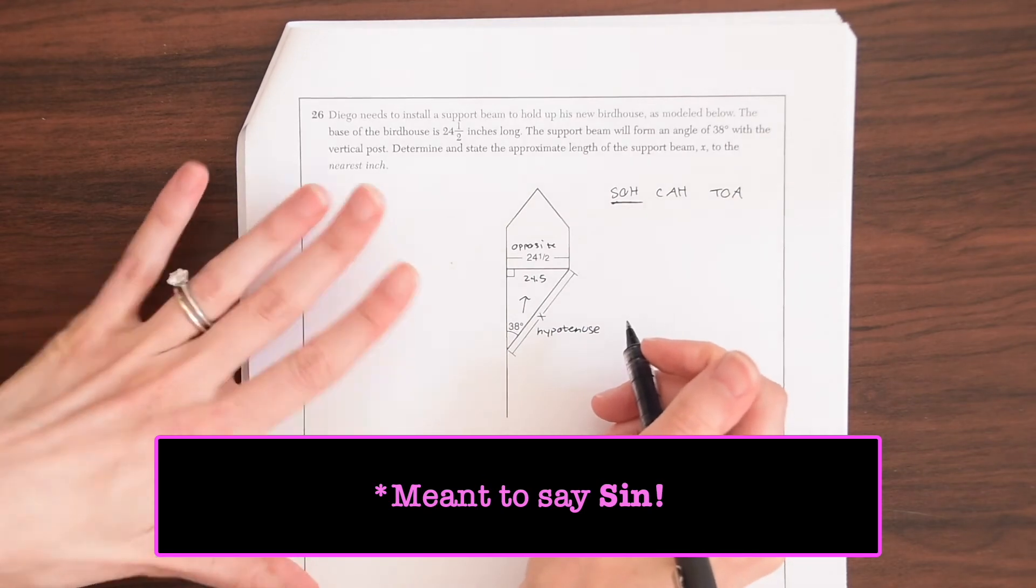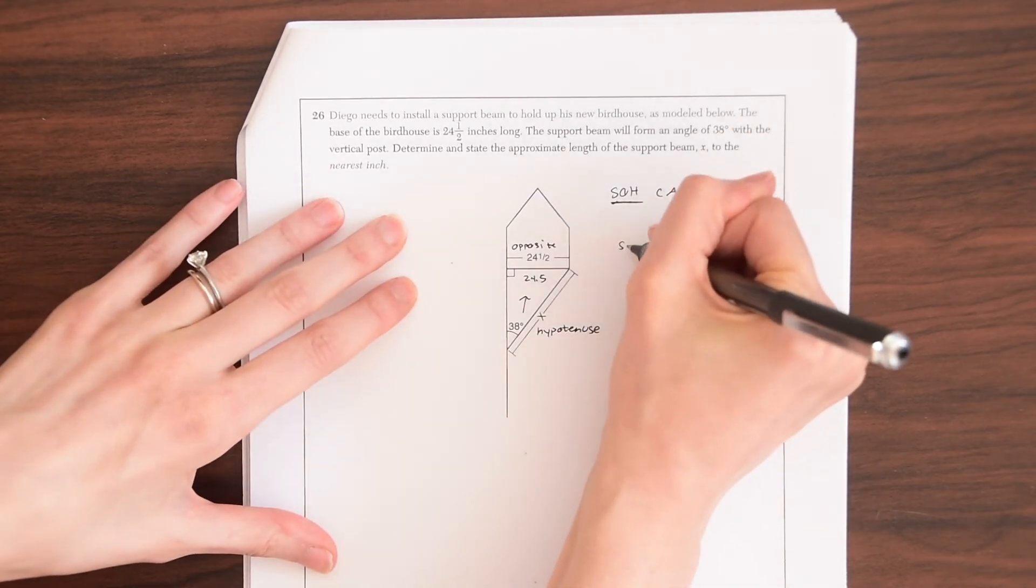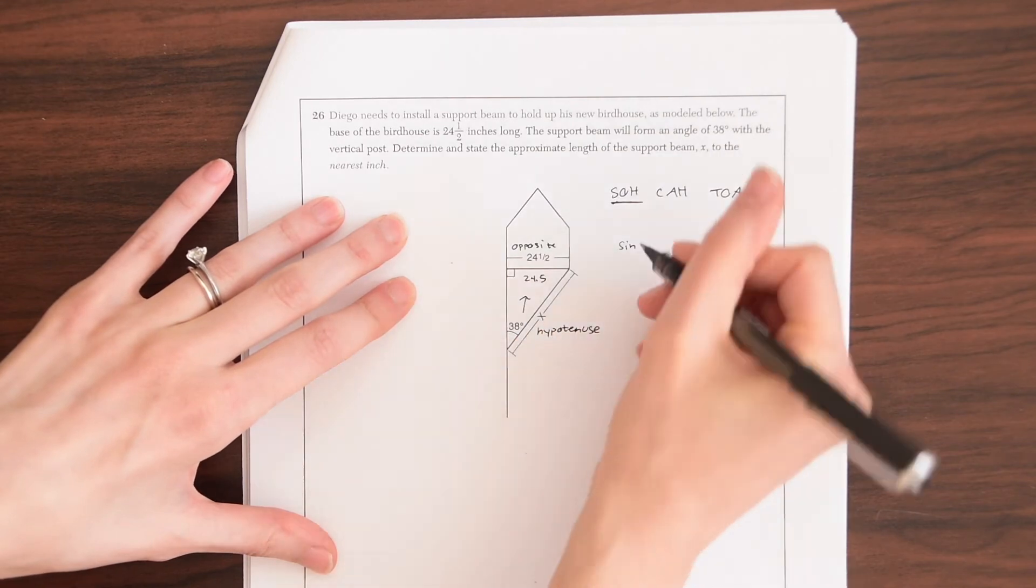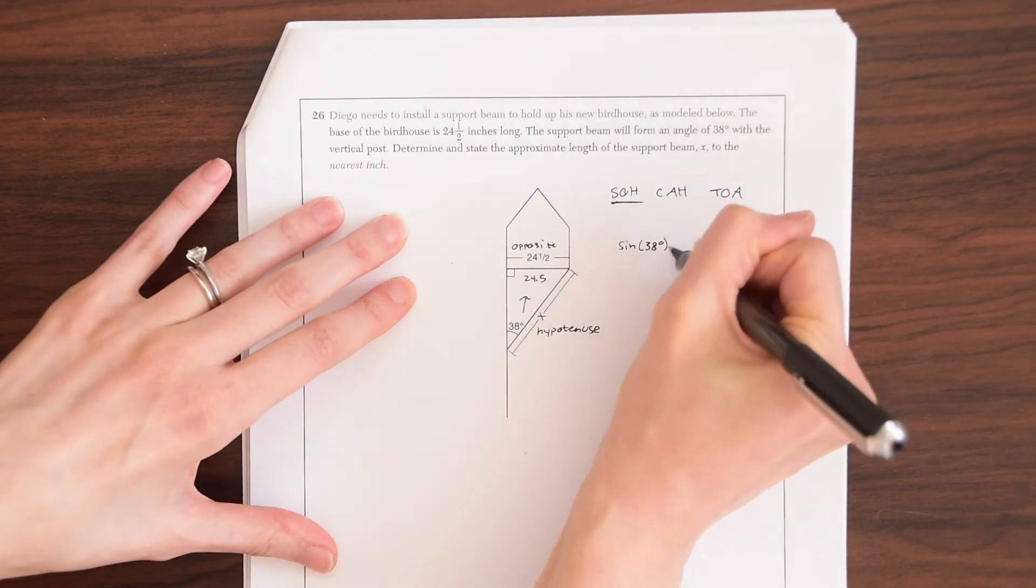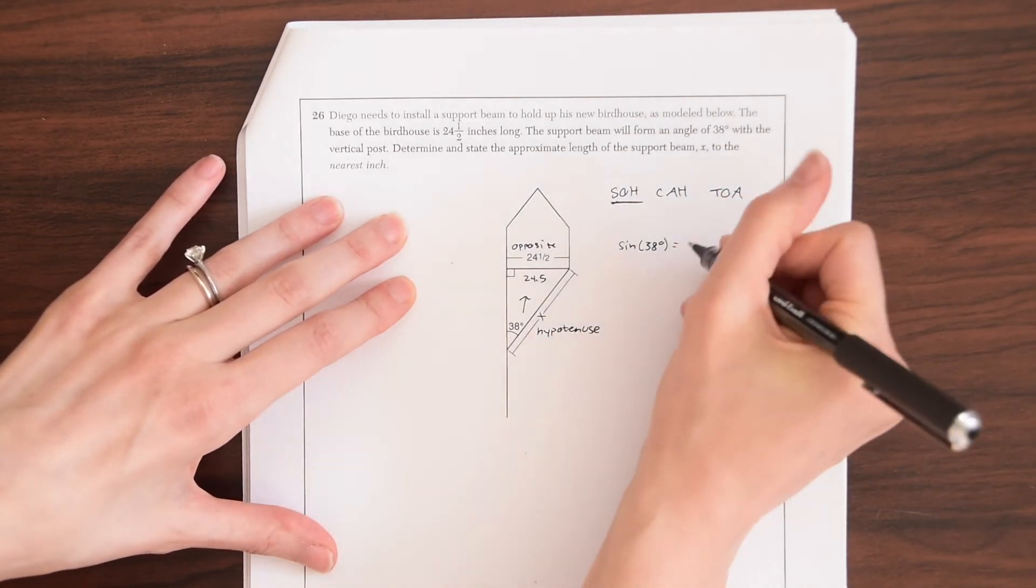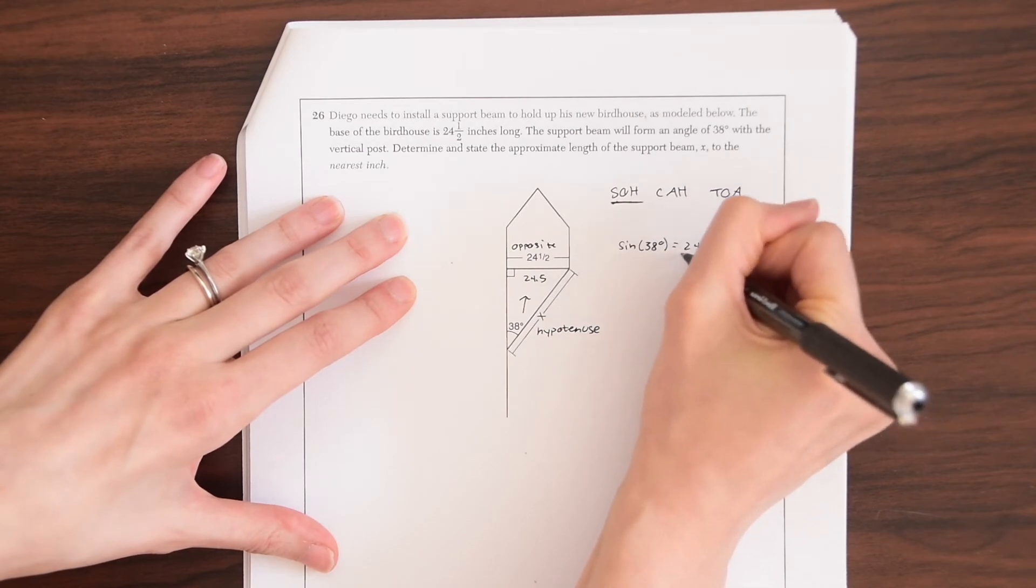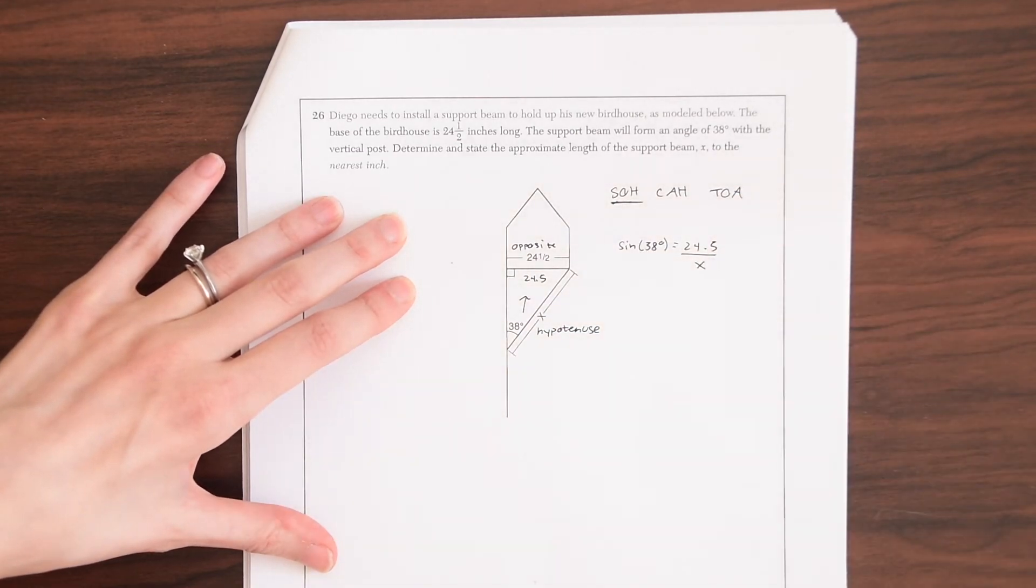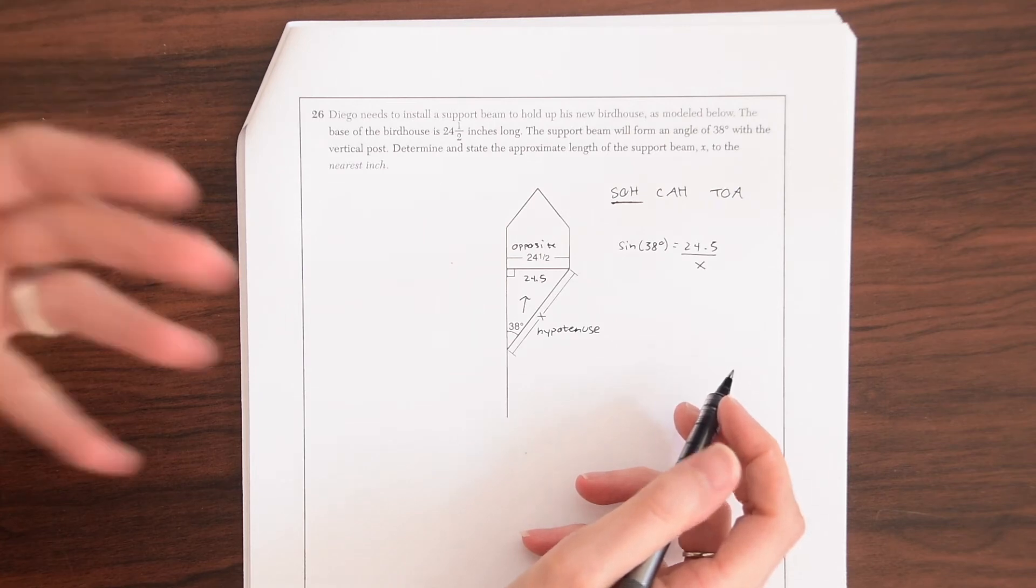So now let's just set up our equation. So we're given the angle so we can go sine of 38 degrees is equal to the opposite, 24.5, over the hypotenuse, which we don't know what that is yet. So now we can just do a little algebra, right?